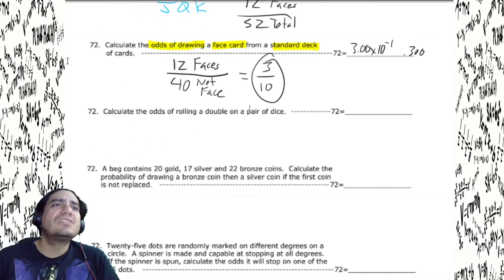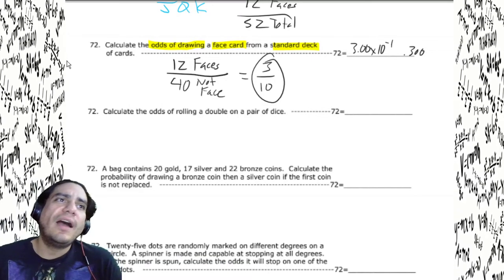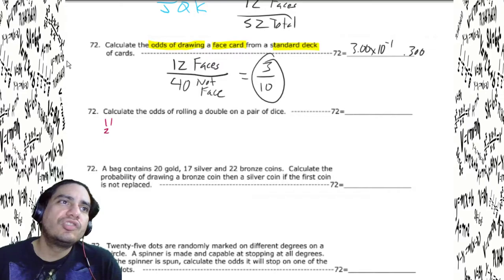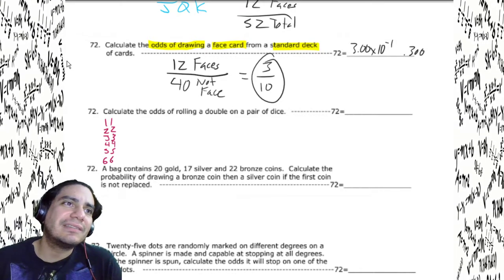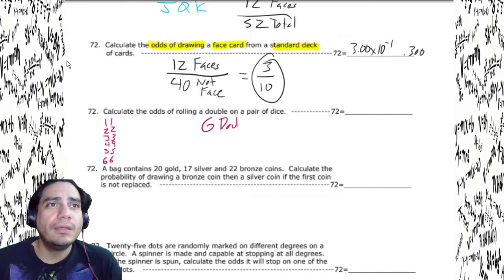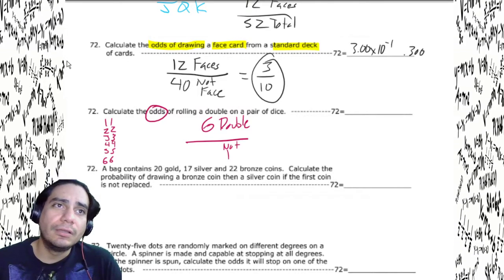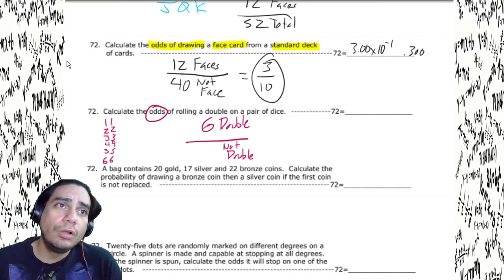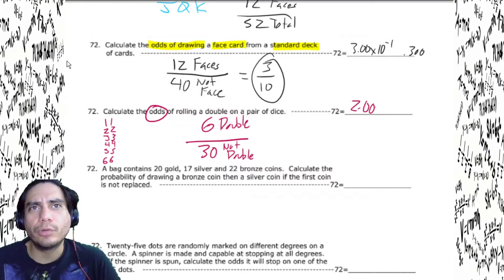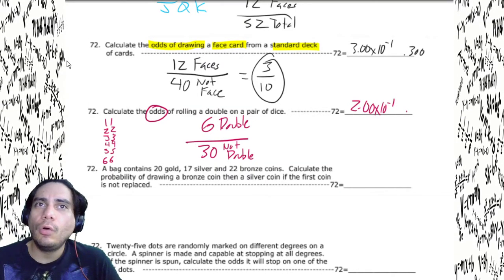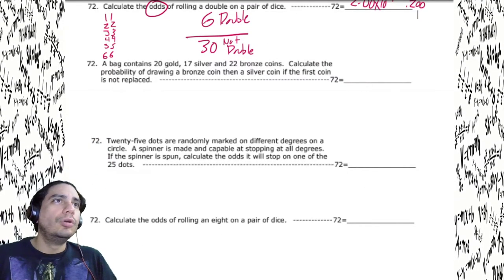What are the odds of rolling a double on a pair of dice? There are six doubles: 1-1, 2-2, 3-3, 4-4, 5-5, 6-6. Since it's odds, out of 36 total there are 30 that are not doubles. Six divided by 30 gives 2.00 times 10 to the negative first, or 0.200.